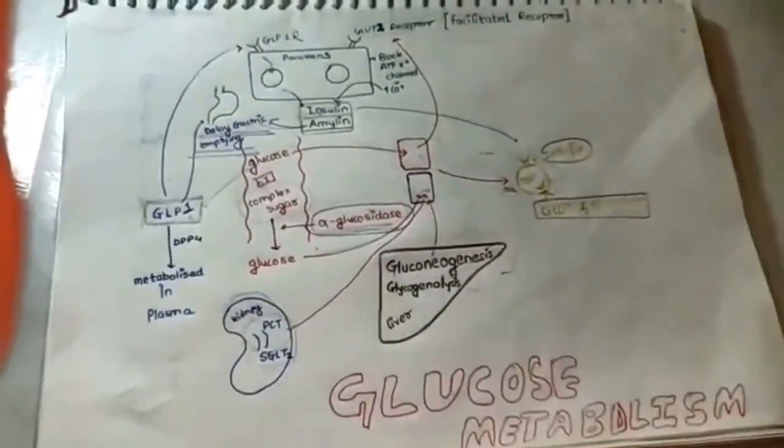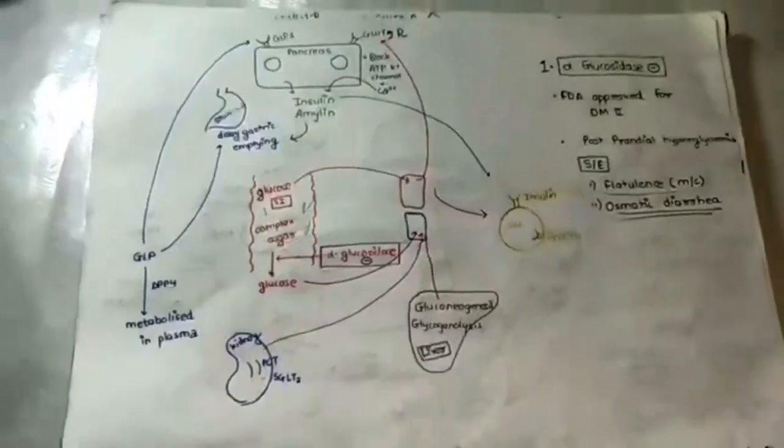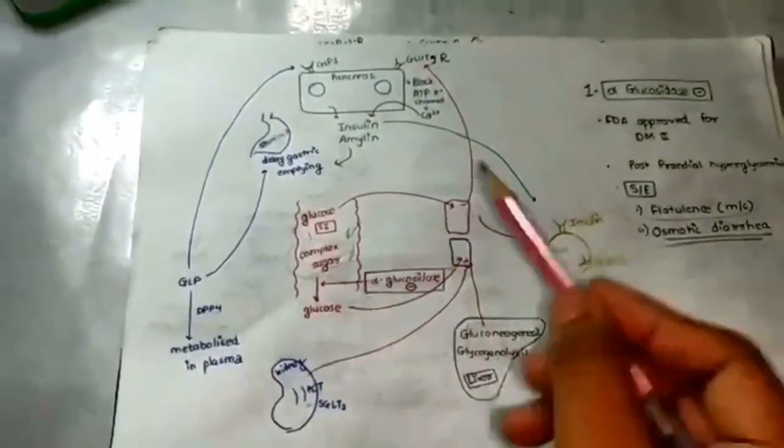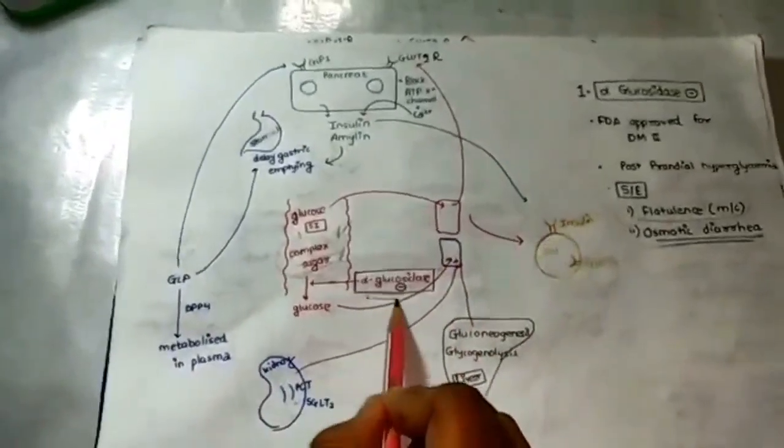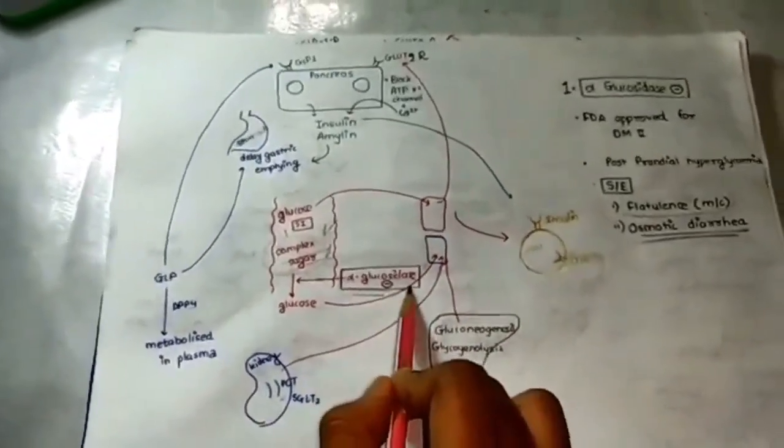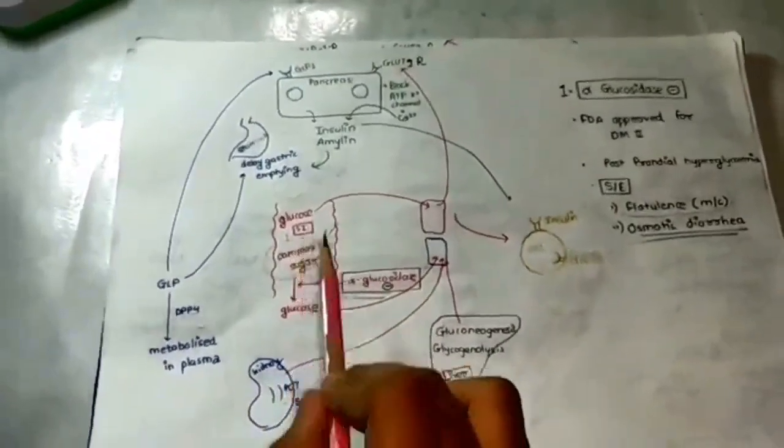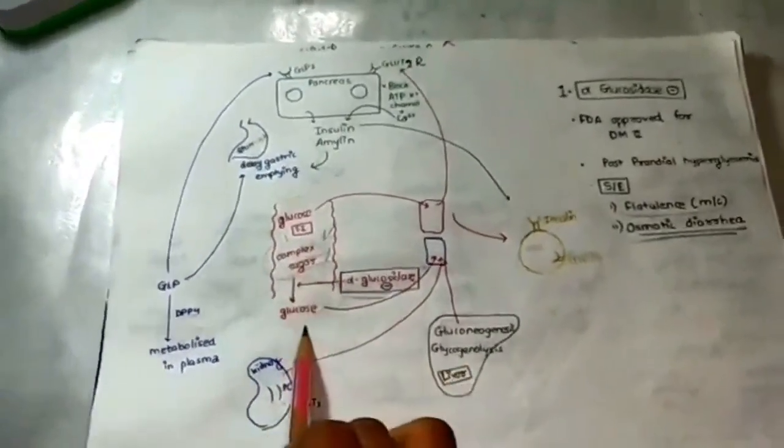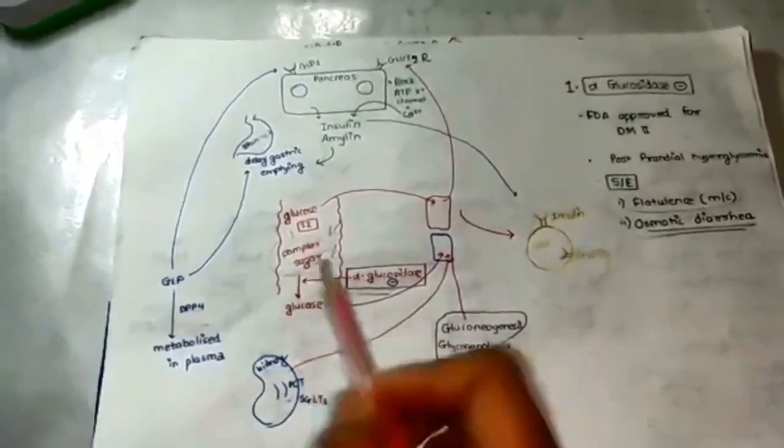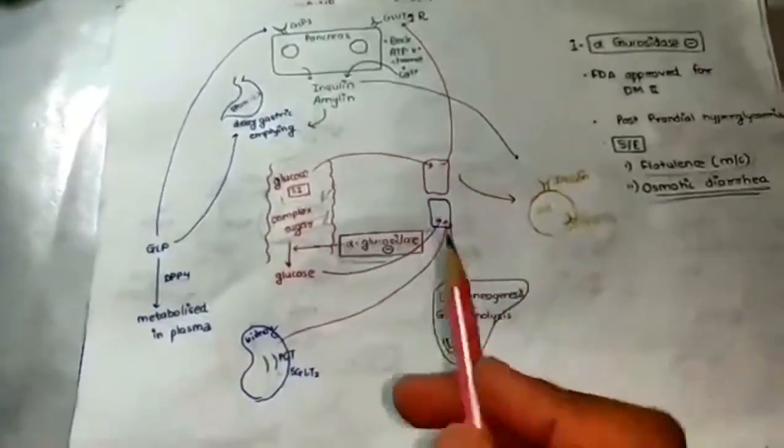Now let's start with our drugs. The first class of drug we can act where alpha-glucosidase is. If alpha-glucosidase is inhibited from converting complex sugar to glucose, it will ultimately lead to reduction in blood glucose level. So we have alpha-glucosidase inhibitors.